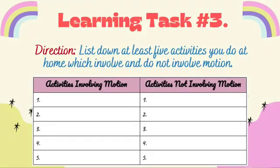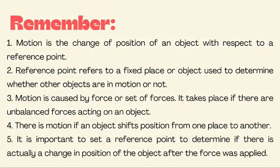Now let's do Learning Task Number 3. Direction: List down at least 5 activities you do at home which involve motion and which do not involve motion. Always remember that motion is the change of position of an object with respect to a reference point. Reference point refers to a fixed place or object used to determine whether other objects are in motion or not. Motion is caused by force or a set of forces. It takes place if there are unbalanced forces acting on an object. There is motion if an object shifts position from one place to another. It is important to set a reference point to determine if there is actually a change in position of the object after the force was applied.